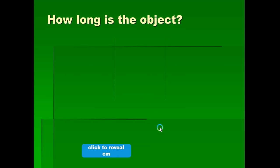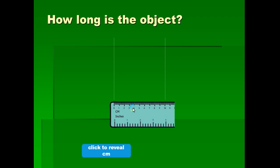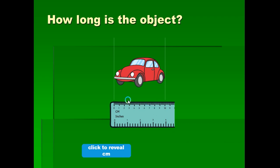How long is this object? This is our ruler, starting from 0 in centimeters. Let's count: 0, 1, 2, 3, 4, 5, 6, 7, 8, 9 — it is 10. Let's see if we are correct. Bravo! It is 10 centimeters.